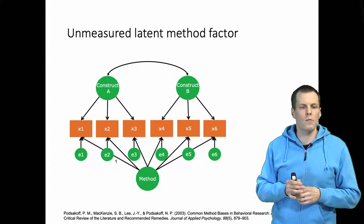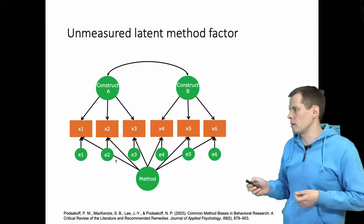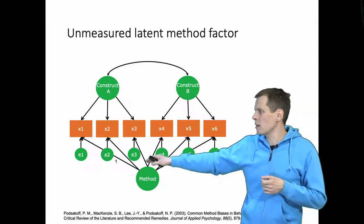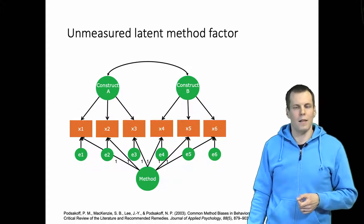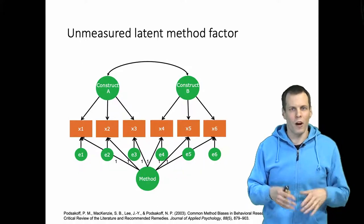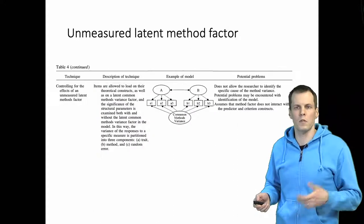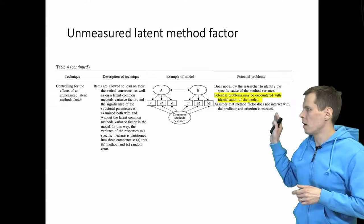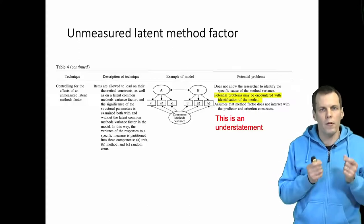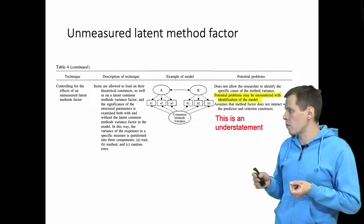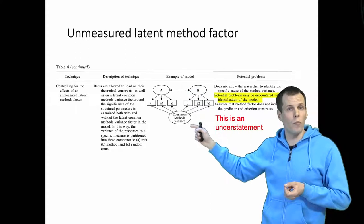The unmeasured latent method factor approach is considered more rigorous and is applied in confirmatory factor analysis. How people usually apply this is to constrain the first indicator loading of the method factor for scale setting, and then constrain the other loadings to be equal — done for identification purposes that are typically not explained in more detail. The problem is that this model has serious identification problems. You simply cannot identify whether the correlation between construct A indicators and construct B indicators is because A and B correlate or because of the method factor.